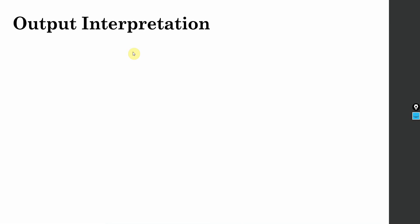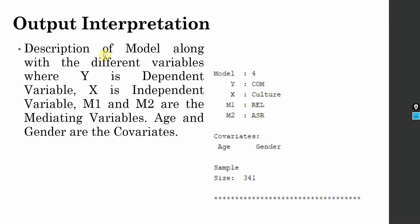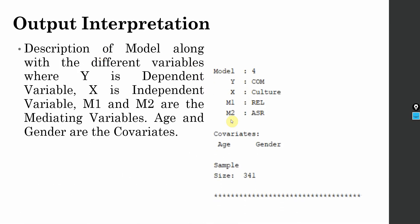Now we are going to interpret the output. The first thing we see is the basic description of the model: model number 4, Y is the dependent variable, X is independent, M1 and M2 are the mediators. There are two covariates — age and gender — and the sample size is 341.